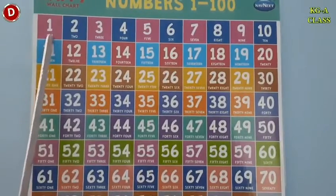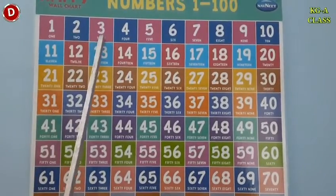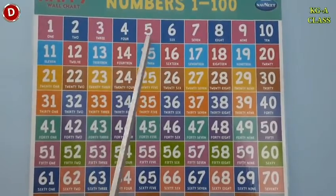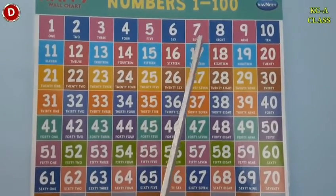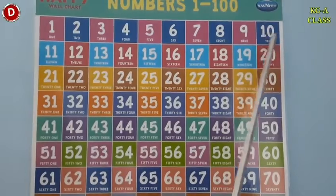Children, now let's learn number counting 1 to 70 with the help of this chart. This is 1, you also speak with me. 1, 2, 3, 4, 5, 6, 7, 8, 9 and after 9 comes 10. 1, 0, 10.